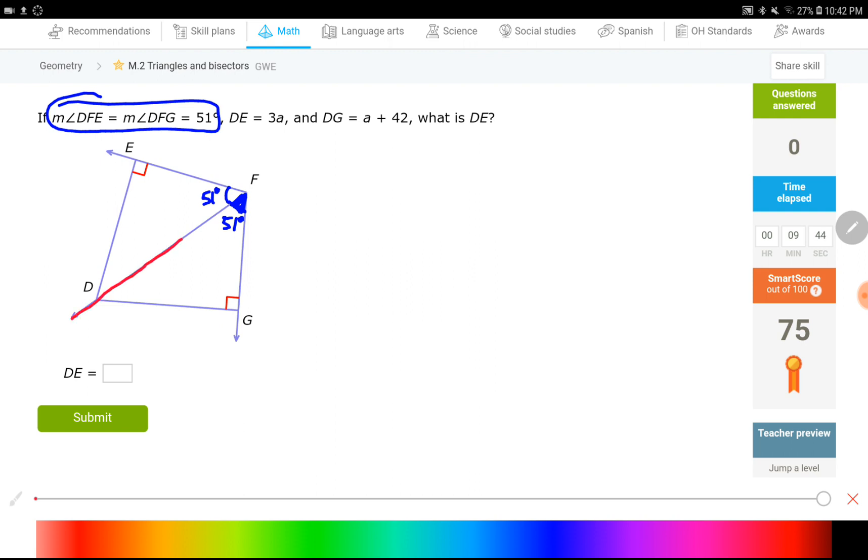What DF does, or what FD does, it cuts the angle in half, because the whole angle is divided into two. Both pieces are 51 degrees. That's why it is called angle bisector. DE is given 3A. DG is A plus 42. When you have DF, DF is the angle bisector. And point D is on the angle bisector.